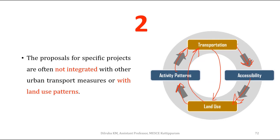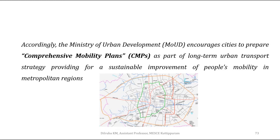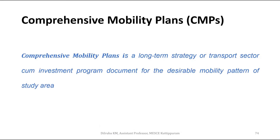Transportation infrastructure causes land use change, and this land use change again creates a need for more transportation infrastructure — a cyclic process. To address all these problems, the Ministry of Urban Development encourages cities to prepare a Comprehensive Mobility Plan (CMP) as part of a long-term urban and transport strategy for sustainable improvement of people's mobility in metropolitan regions.